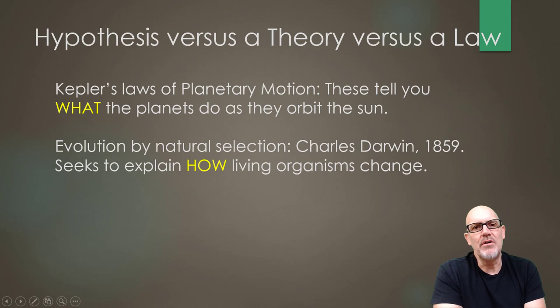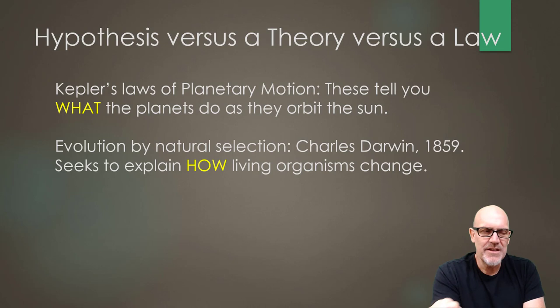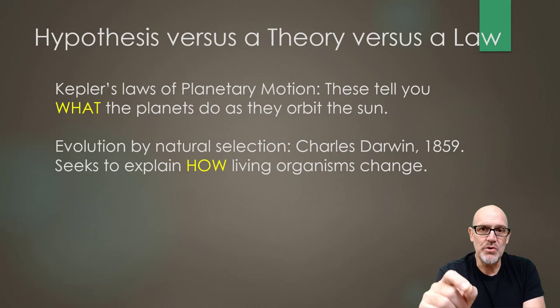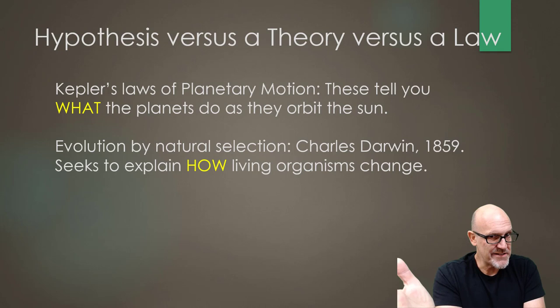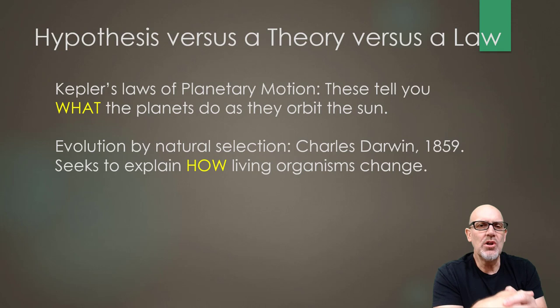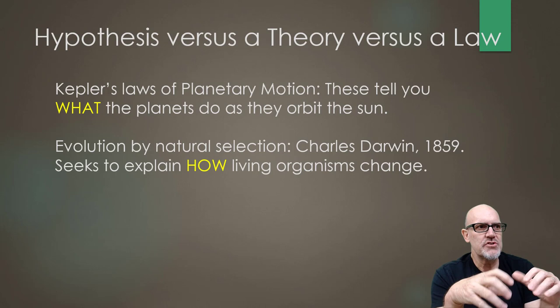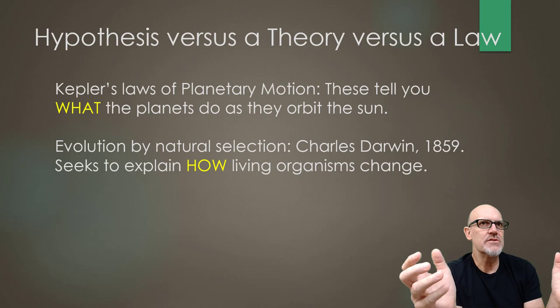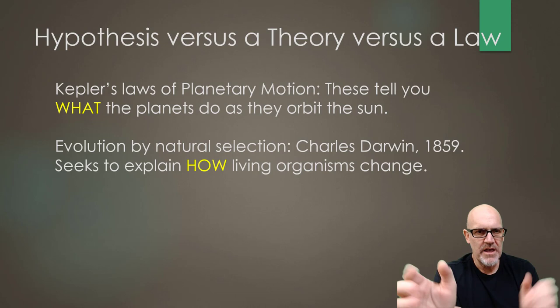An example of a law would be Kepler's laws of planetary motion. These tell you what the planets do as they orbit the sun. Kepler took very careful observations and was able to tell us exactly what the planets are doing. Those three laws are still in use today. But Kepler didn't really know why that happened — he had a theory involving harmonics, which has since been proven false. He knew exactly what the planets did, but not why. Laws are a lot more certain than theories. A law is almost certain, whereas theories explain how things happen — with various levels of certainty.